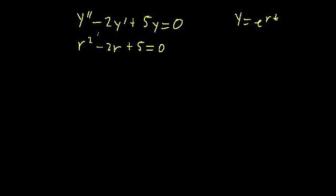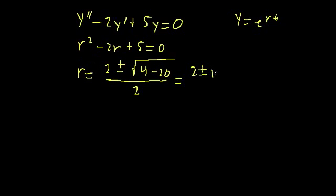Now, you can't actually factor this simply, so let's try and find the roots by using the quadratic equation. So r is going to be equal to negative b, which in this case is positive 2, plus or minus the square root of negative 2 squared minus 4 times 5 times 1, so minus 20, all over 2 times 1. That means our roots are 2 plus or minus the square root of negative 16, all over 2.